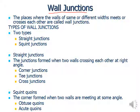Today we are going to discuss wall junctions. The places where walls of same or different widths meet or cross each other are called wall junctions. The types of wall junctions may be broadly two: first, straight junctions, and second, squint junctions. Straight junctions mean the angle is a right angle.